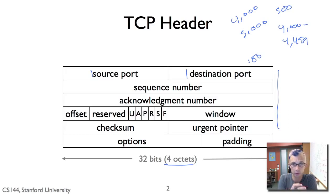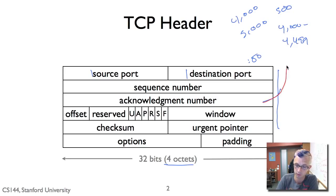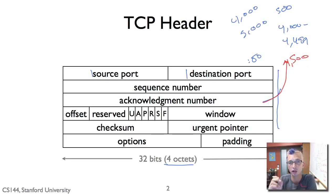The acknowledgement number acknowledges the last byte received plus one. So if I were to send segment bytes 4000 to 4499 and the other side received it, it would send an acknowledgement number of 4500. That is, in TCP the ACK is not for the last byte received but that plus one — it indicates what is the next byte that is needed.